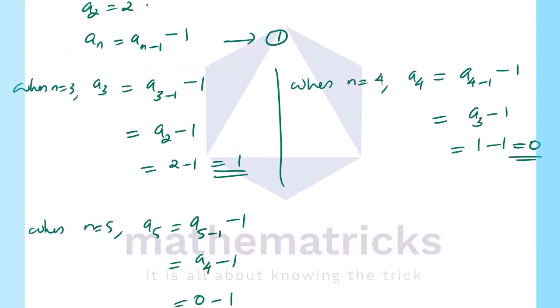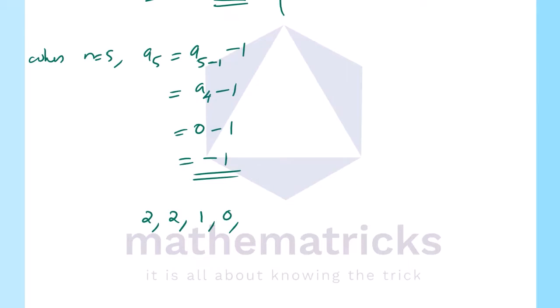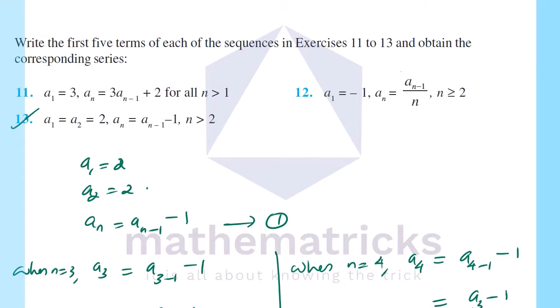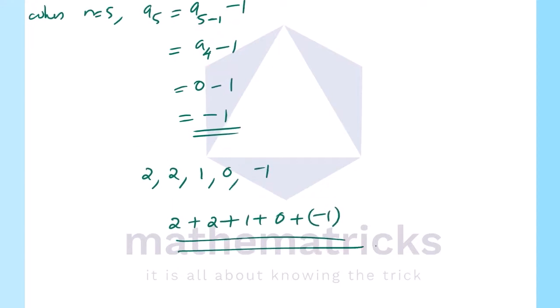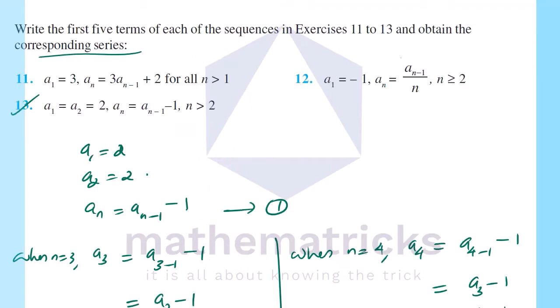The first five terms are: a₁=2, a₂=2, a₃=1, a₄=0, a₅=-1. From this sequence, the corresponding series is 2 + 2 + 1 + 0 + (-1). We are done with question 13. Remaining questions will be covered in the next session. Thank you.